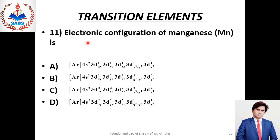Next question No. 11: Electronic configuration of manganese — manganese کے پاس 25 electrons ہوتے ہیں تو اس کے D orbitals سارے partially filled ہونے چاہیے۔ Right option must be Alpha.